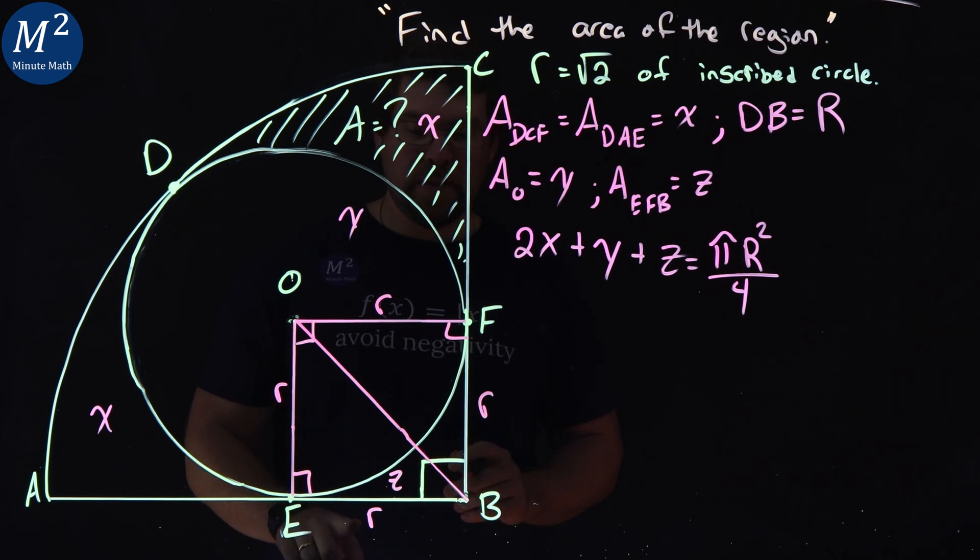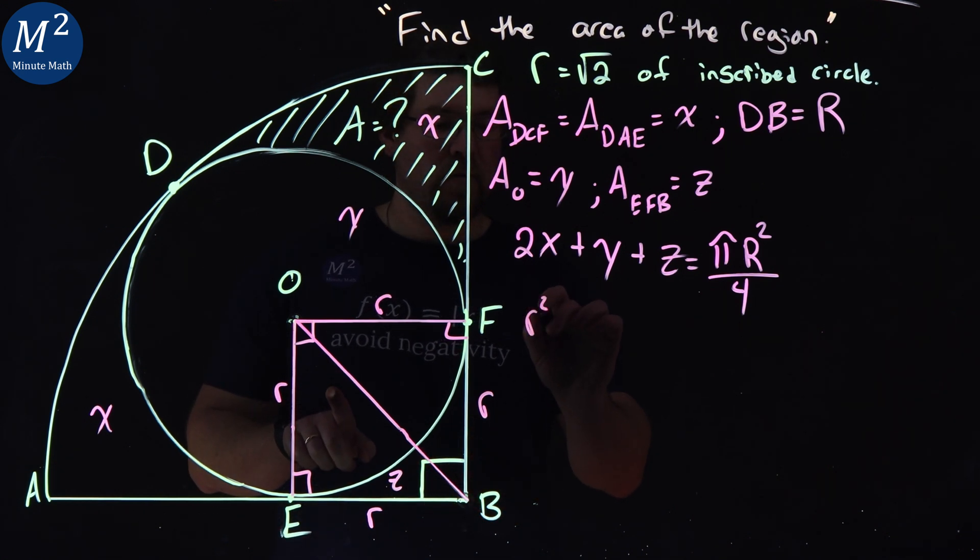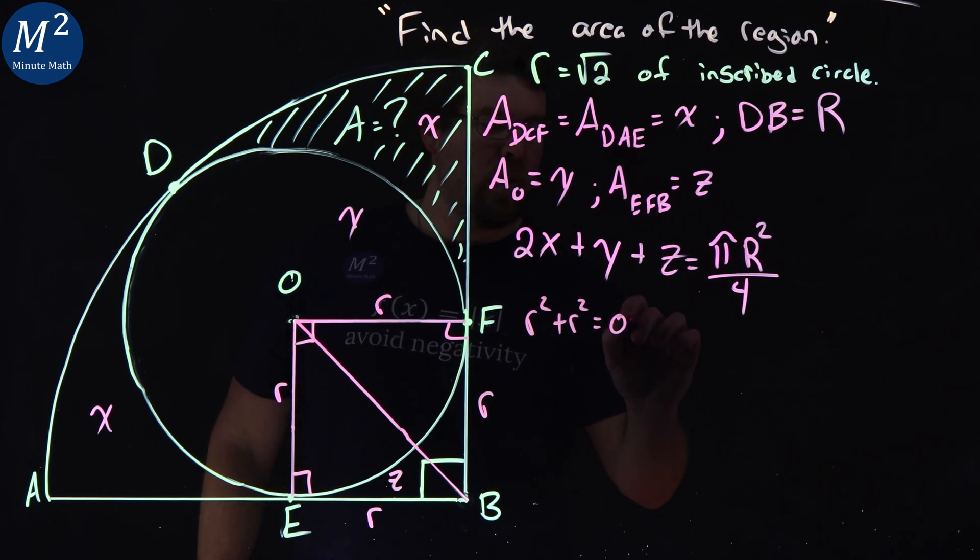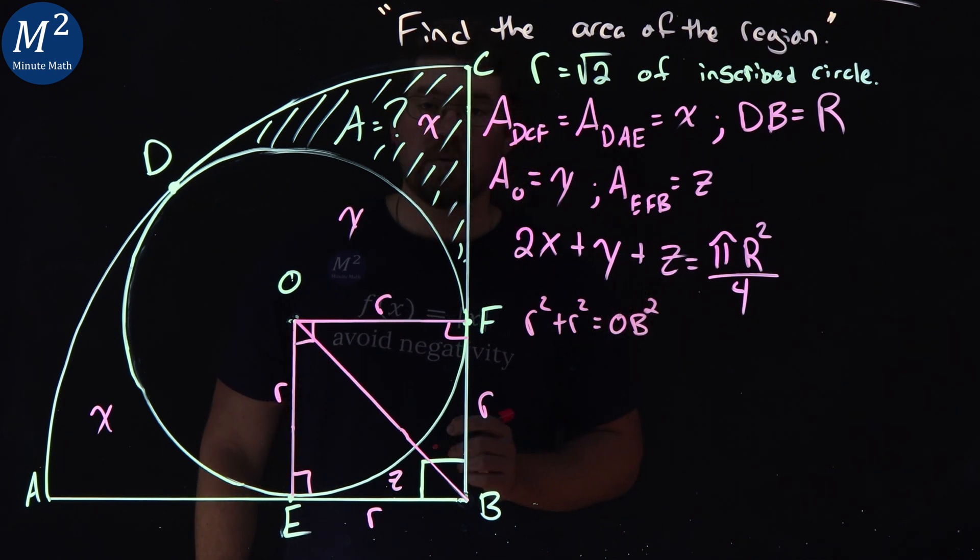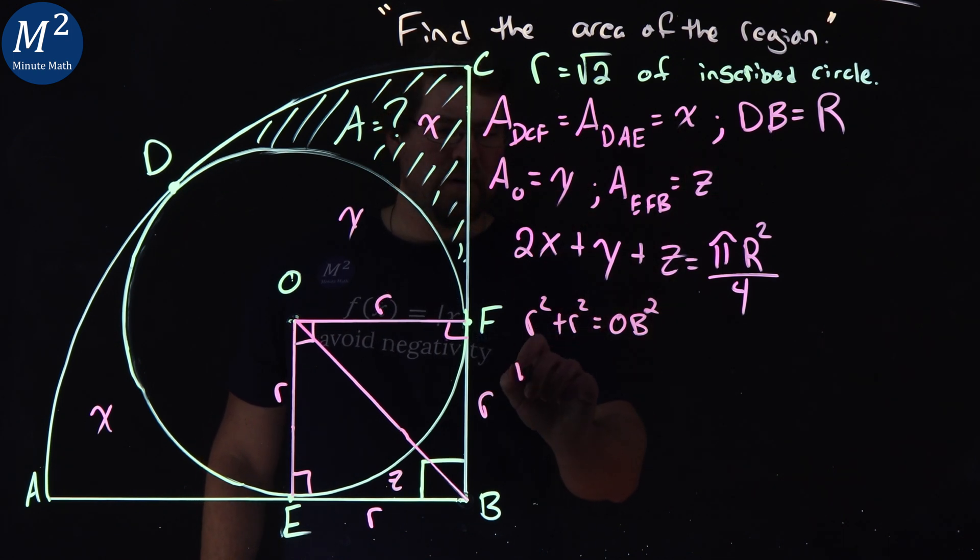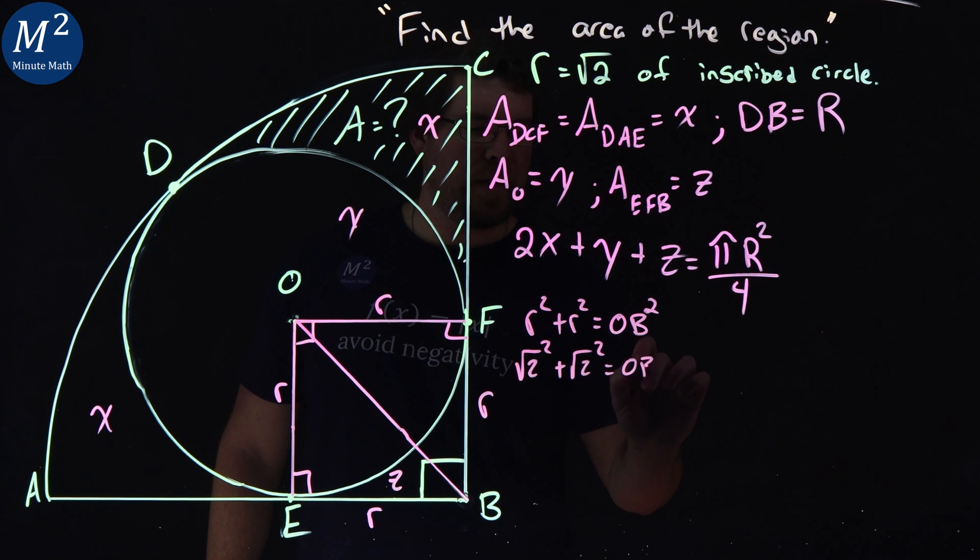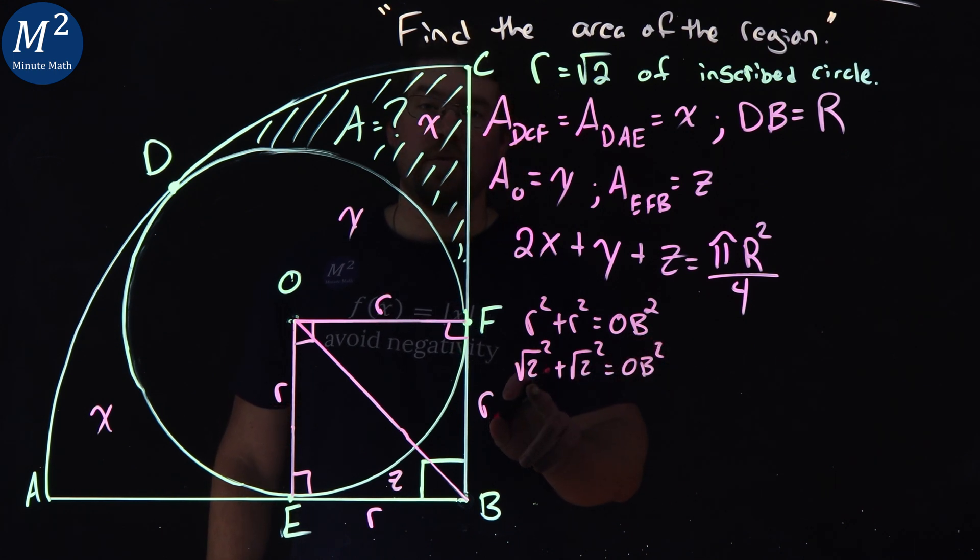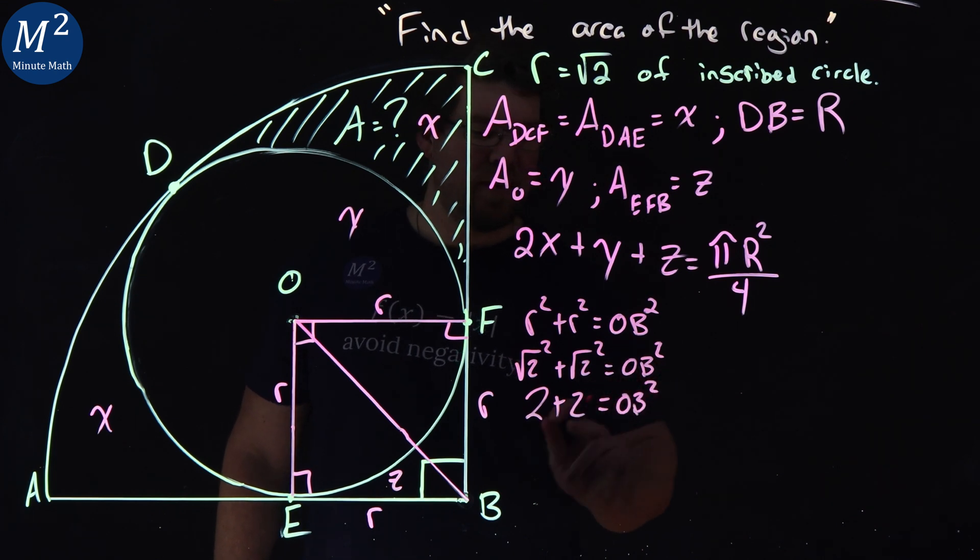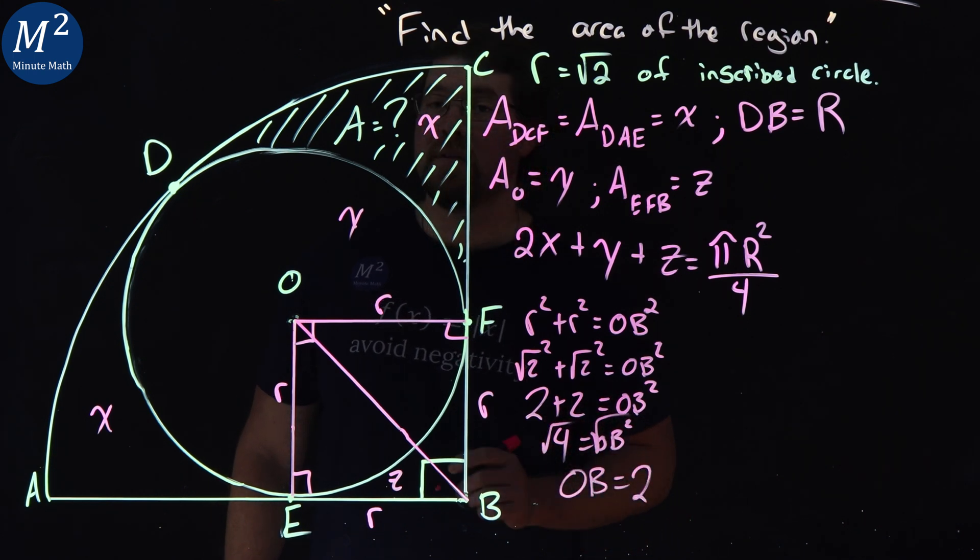A squared plus B squared equals C squared. So R squared plus R squared equals OB, that length, squared. Well, R is the square root of 2. So we have square root of 2 squared plus square root of 2 squared equals OB squared. Square root of 2 squared is 2. 2 plus 2 equals OB squared. 2 plus 2 is 4, equals OB squared. Square root both sides here, and OB is just 2. Well, that's always nice to see.